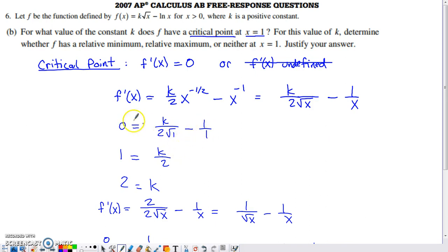And then we can solve for k after we set that derivative equal to zero. And so if you add this one to the other side, multiply by two, you get that when k is equal to two, this function has a critical number at the x value of one.